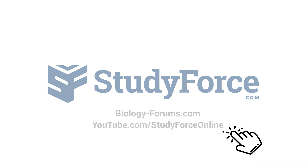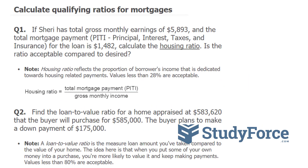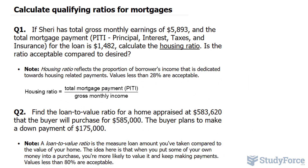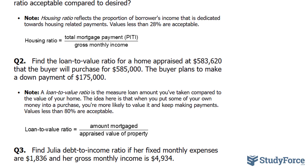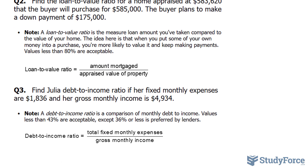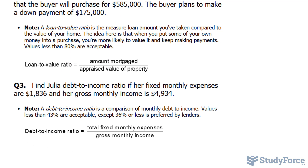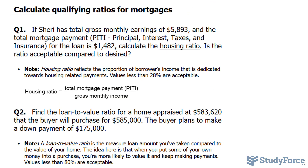In this lesson we'll discuss how to calculate qualifying ratios for mortgages. Specifically, we'll be focusing on the housing ratio, the loan to value ratio, and debt to income ratio. All of these play a major role when it comes to deciding whether you get a mortgage from your lender.